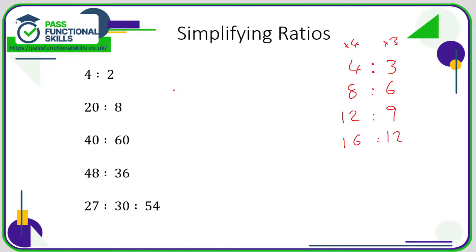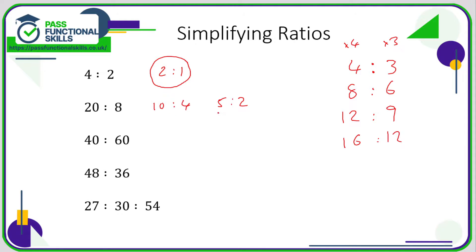In the same way that you can simplify a fraction, you can simplify a ratio. All we're doing is looking for a number that we can divide both parts by. For four to two, they're both even, so divide by two — it becomes a ratio of two to one. The ratio of four to two and the ratio of two to one are exactly the same; we prefer the simplified form. Twenty to eight simplifies to ten to four, which simplifies to five to two. All of these ratios are identical, but five to two is in its simplest form.